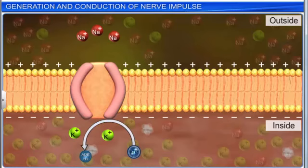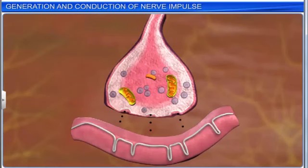This returns the membrane to its resting potential, and the neuron is ready to receive another stimulus. A junction helps transmit the nerve impulse from one neuron to another. These junctions are called synapses.